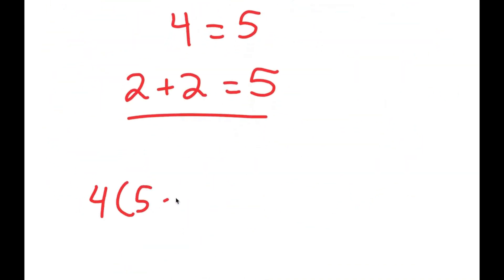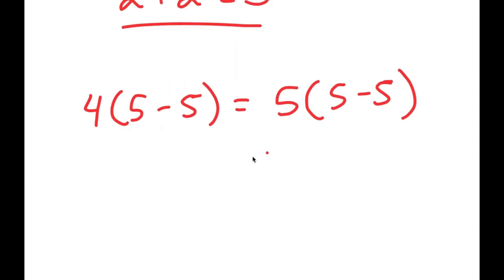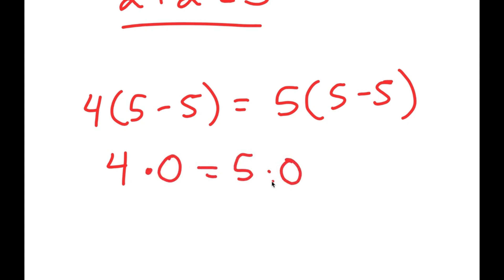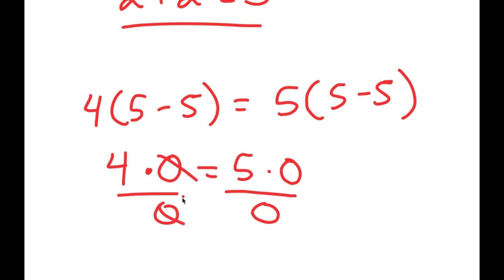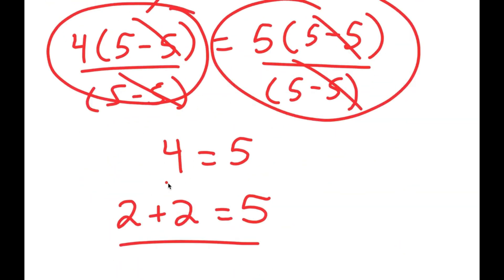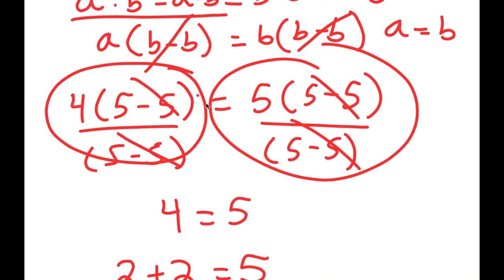I have 4 times (5 minus 5) is equal to 5 times (5 minus 5). Instead of just dividing both sides by (5 minus 5), what is 5 minus 5? 5 minus 5 is equal to 0. So this is basically 4 times 0 is equal to 5 times 0. If I try to divide both sides by 0, well, 0 divided by 0 is not equal to 1 — that's indeterminate. So we can't actually cancel these out, because doing so implies that 0 divided by 0 equals 1, which is wrong. That's where I made the mistake — canceling out the (5 minus 5)s means dividing by 0, which is against the laws of mathematics.